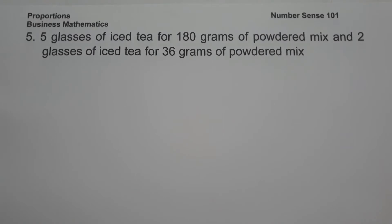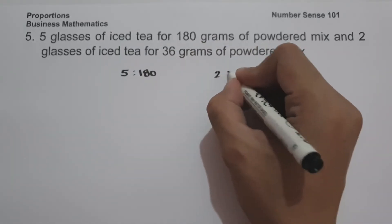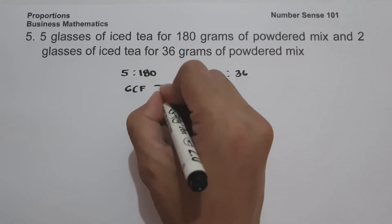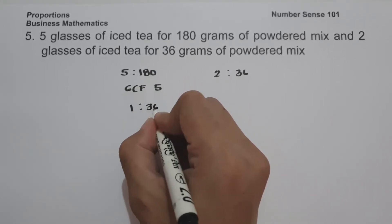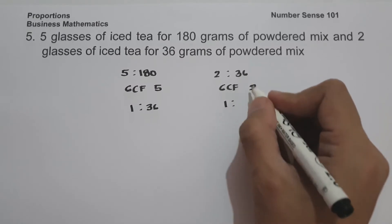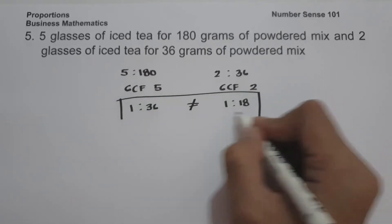On example number five: 5 glasses of iced tea for 180 grams of powdered mix, and 2 glasses of iced tea for 36 grams of powdered mix. We have 5 is to 180, and 2 is to 36. The GCF between 5 and 180 is 5, giving 1 to 36. The GCF between 2 and 36 is 2, giving 1 to 18. Since we don't have the same ratio, therefore they are not equivalent.